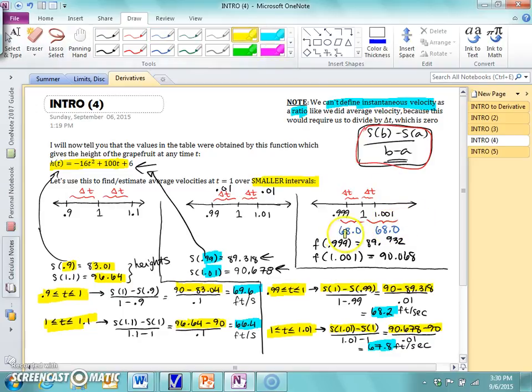So the average speed from 0.999 to 1 was 68, and the average speed from 1 to 1.001 was 68. So finally, we have some values that agree at least a point, or at least a one decimal point.